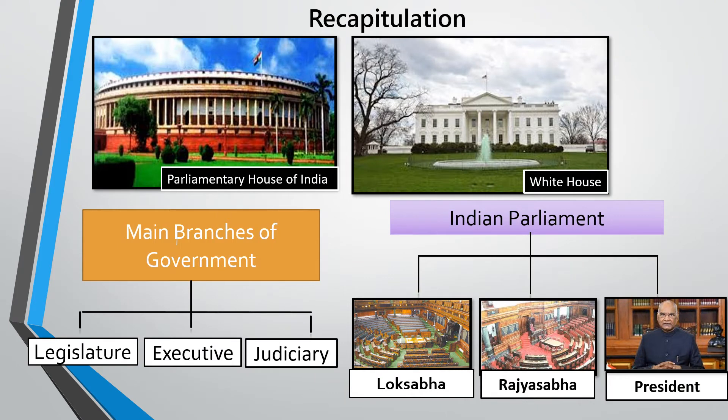In chapter 1, we learnt introduction to the parliamentary system of government. We were also introduced to two forms of government: parliamentary and presidential system of government. We were also introduced to the three branches of government: Legislature, the body that makes laws; executive, which implements the laws; and judiciary, that provides justice.